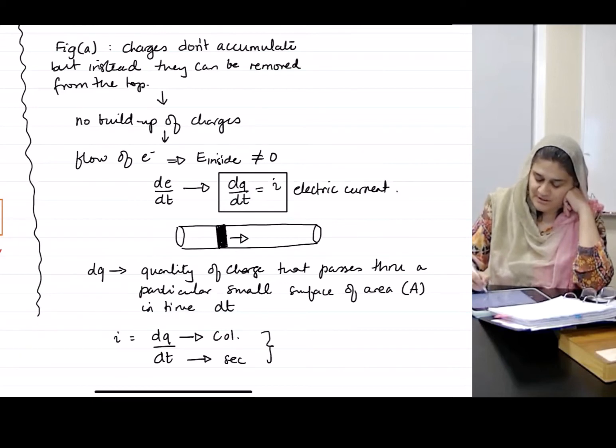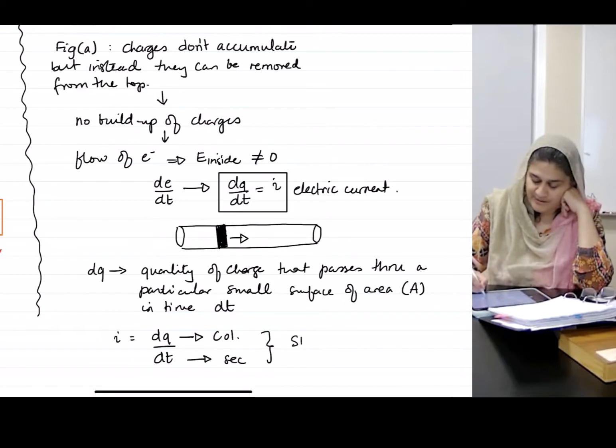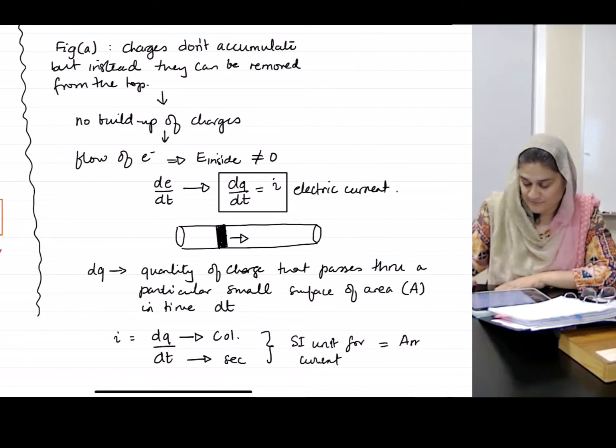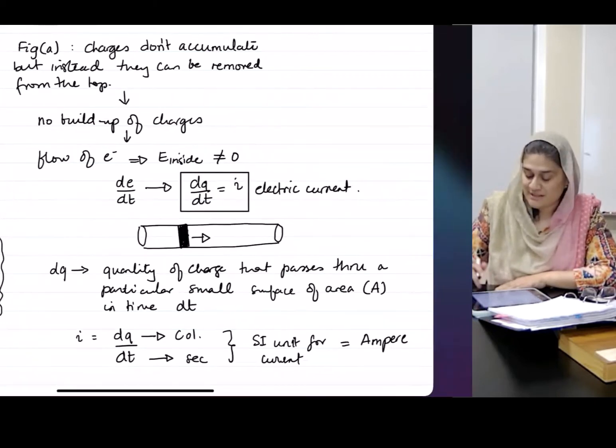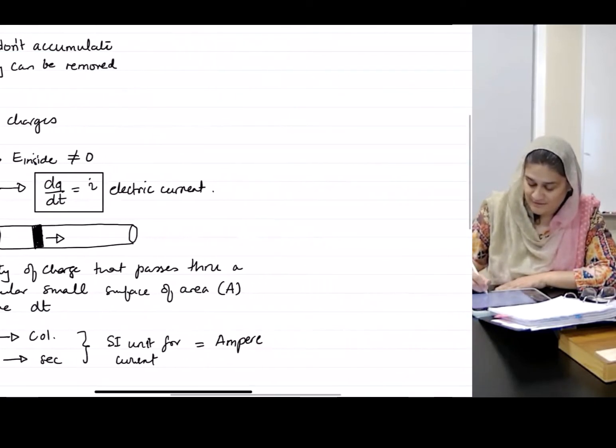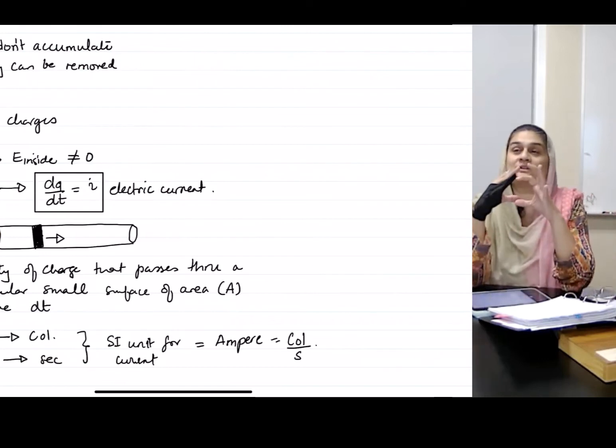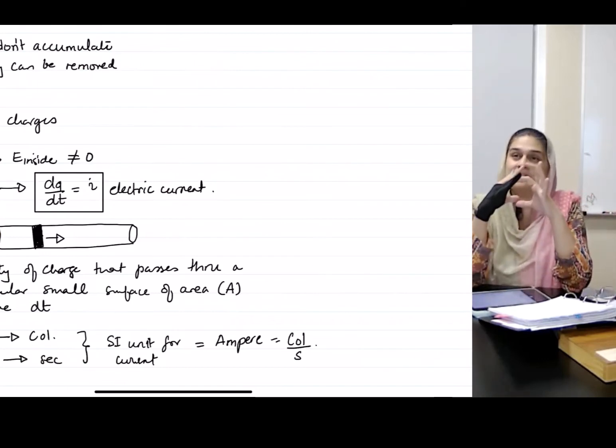So the SI unit for current is, drumroll, Ampere, which is nothing other than Coulomb per second passing through a particular cross section at any given time.